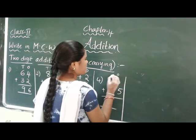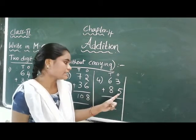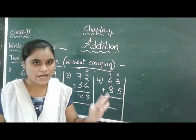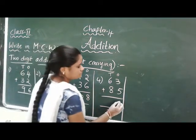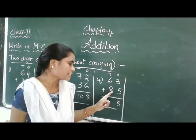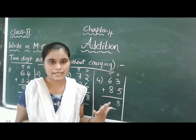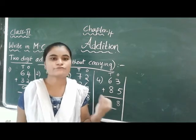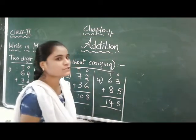Next: ones place and tens place. 3 in the mind, take 5 fingers, 3 after 4, 5, 6, 7, 8. Then 6 in the mind, take 8 fingers, 6 after 7, 8, 9, 10, 11, 12, 13, 14. Answer is 114.